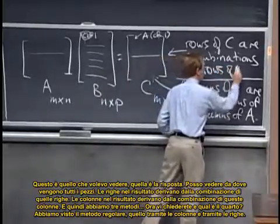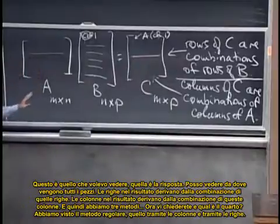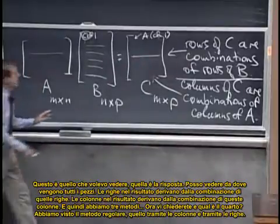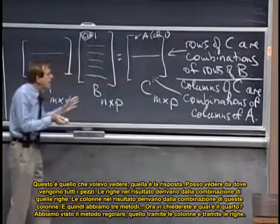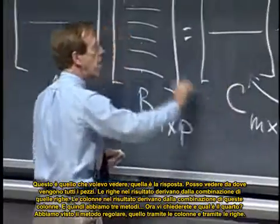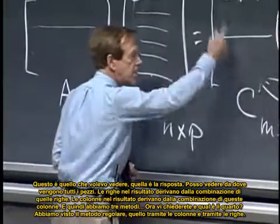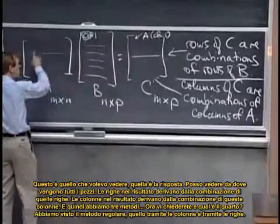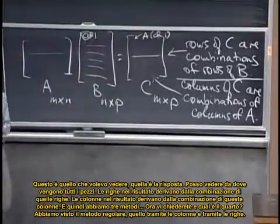Rows of B. That's what I wanted to see, that this answer, I can see where the pieces are coming from. The rows in the answer are coming as combinations of these rows. The columns in the answer are coming as combinations of those columns. And now that's three ways.